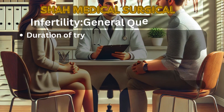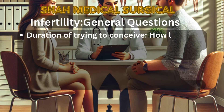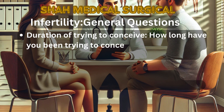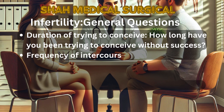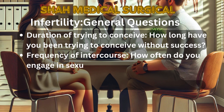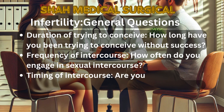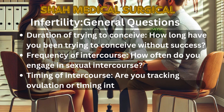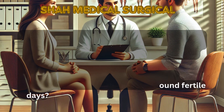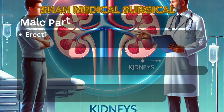Infertility — general questions. When assessing infertility, ask about: 1. Duration of trying to conceive — how long has the patient been trying without success? 2. Frequency of intercourse — how often does the couple engage in intercourse? 3. Timing of intercourse — is ovulation being tracked or intercourse timed around fertile days?